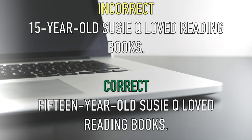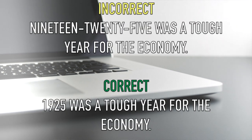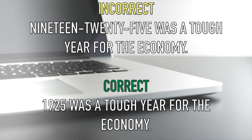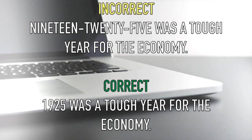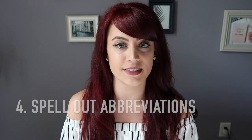I'm going to pop these examples onto the screen so you can get a better feel for what I'm talking about. For example, in '15-year-old Susie Q loved reading books,' you would spell out 'fifteen.' But if you use a year like 1925 and start your sentence with it — '1925 was a tough year for the economy' — then you would use the numeric symbols instead of spelling it out.